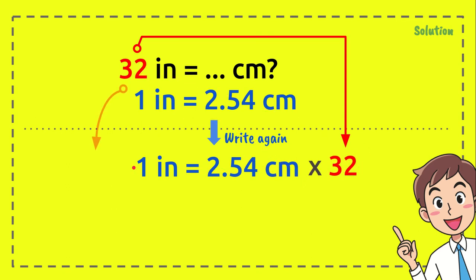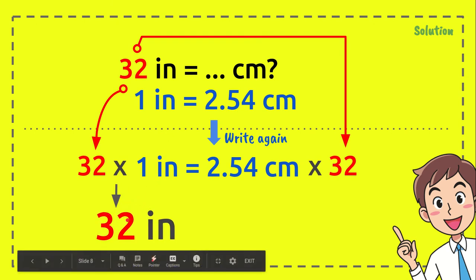We multiply 32 with 1 inch. It makes it equal because now we have 32 here and 32 here as well. So, 32 times 1 equals 32, just like what we have from the question.